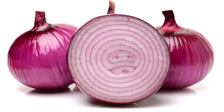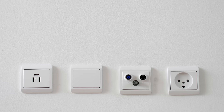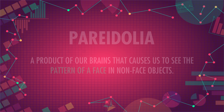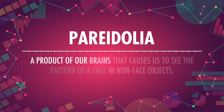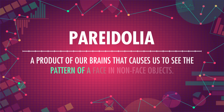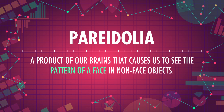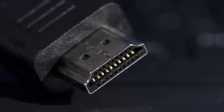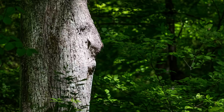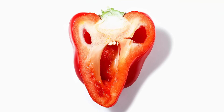Hi, I'm Adrienne Hill, and welcome back to Crash Course Statistics. If you've ever seen a face in an onion, or a grilled cheese, or any other inanimate object, you've experienced pareidolia, which is a product of our brains that causes us to see the pattern of a face in non-face objects. This happens because our brains are so good at seeing patterns that they sometimes see them when they're not really there, like a face in a bell pepper. And faces aren't the only patterns we see — our brains recognize patterns in everything, especially in sequences of events, like the kind we're going to talk about today, as we start talking about probability.